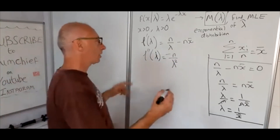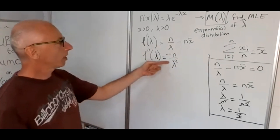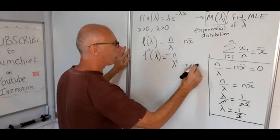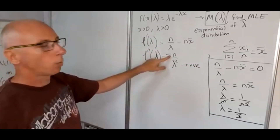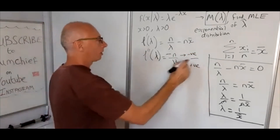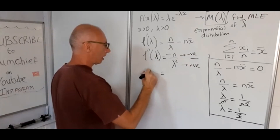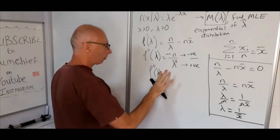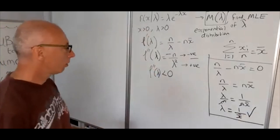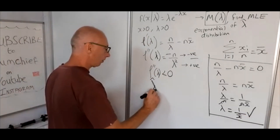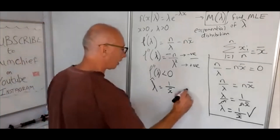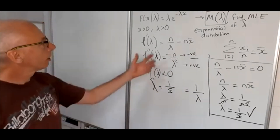So the second derivative is -n / lambda^2. Since lambda > 0, the denominator lambda^2 is positive, and n is always at least 1, so -n / lambda^2 is always less than zero. Therefore, lambda_hat = 1 / x̄ is indeed a maximum. This makes sense because, for the exponential distribution, the mean is 1 / lambda.